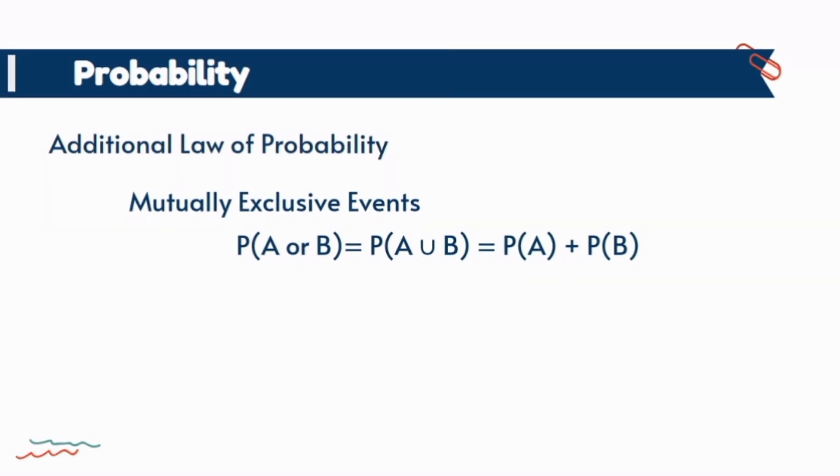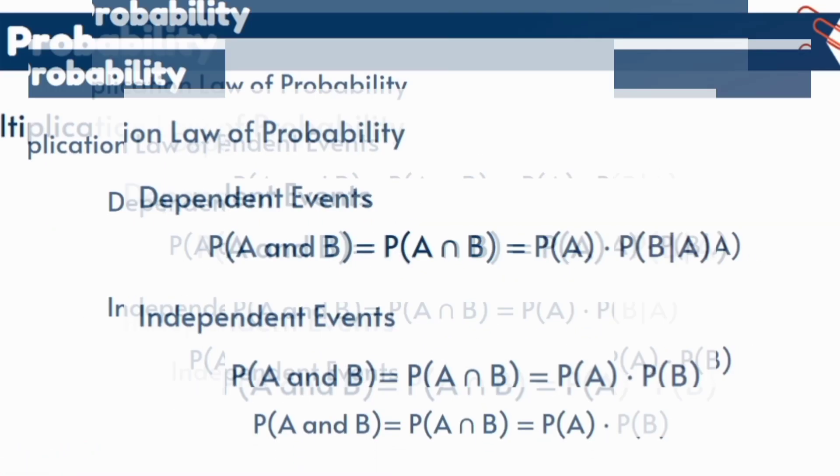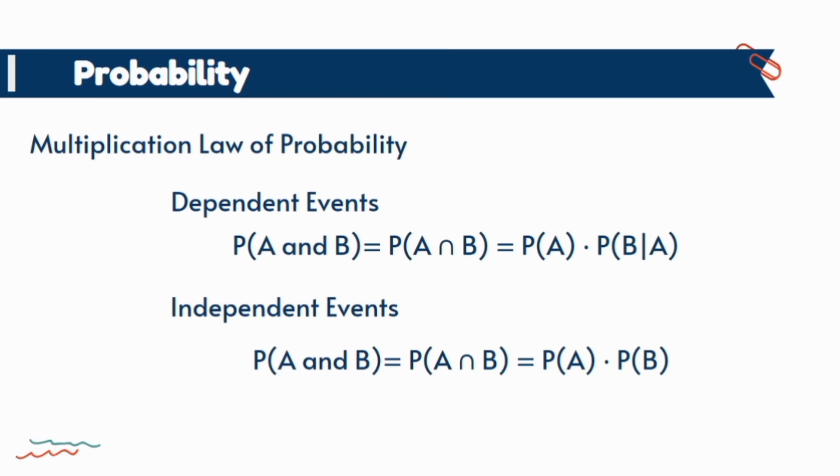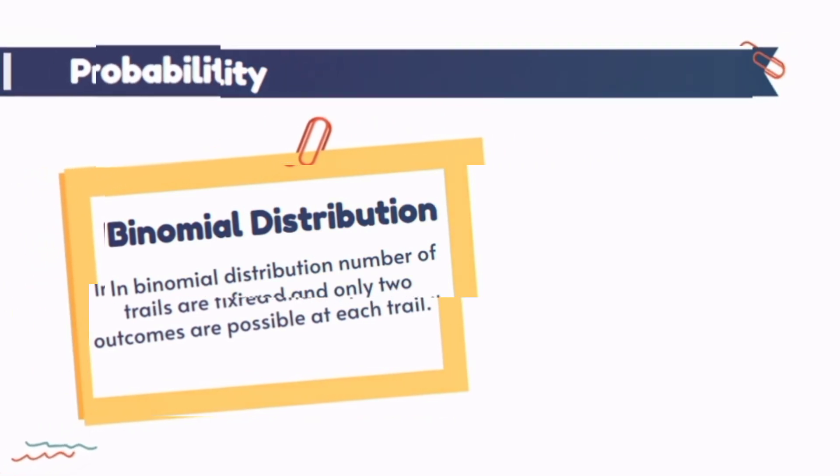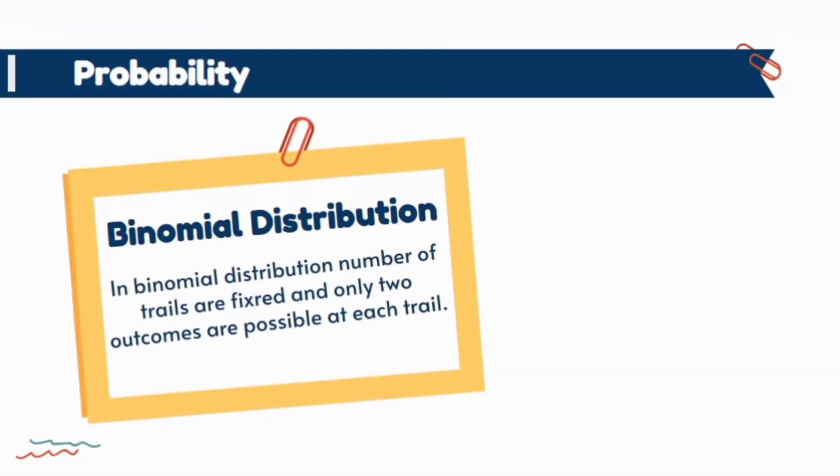Where the multiplication law will take place when the word 'and' will come between two or more events, then we use these formulas for dependent and independent events.